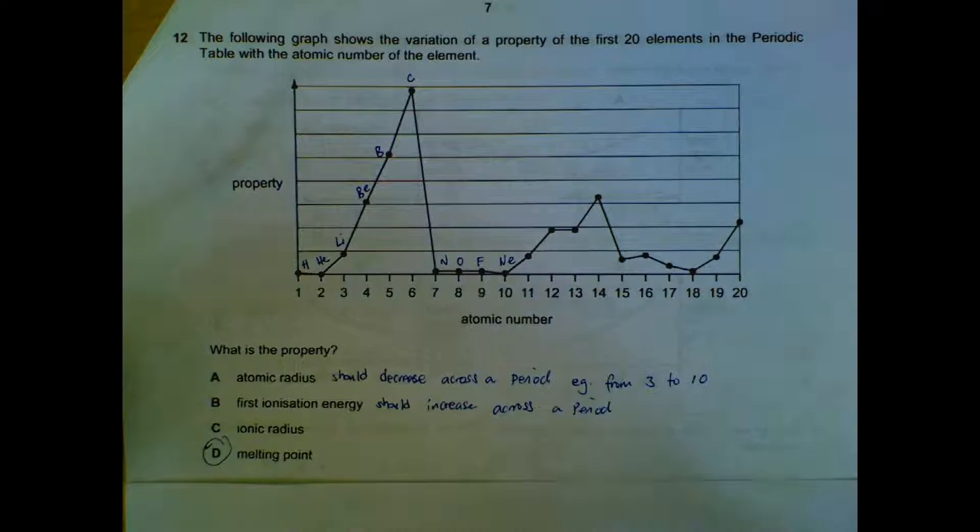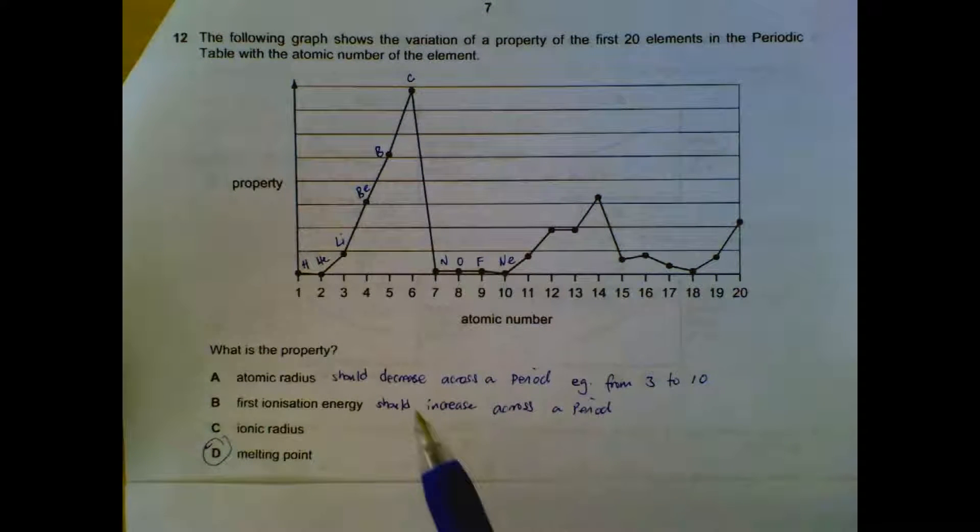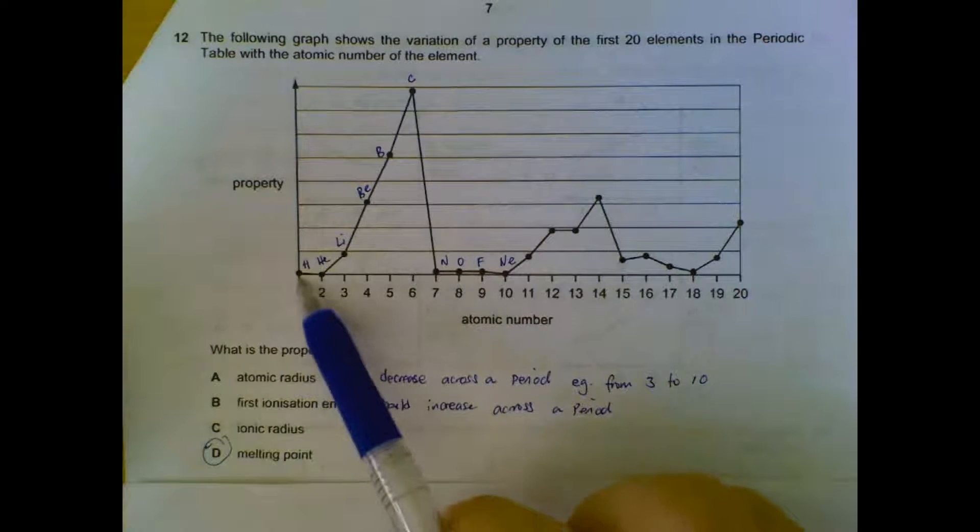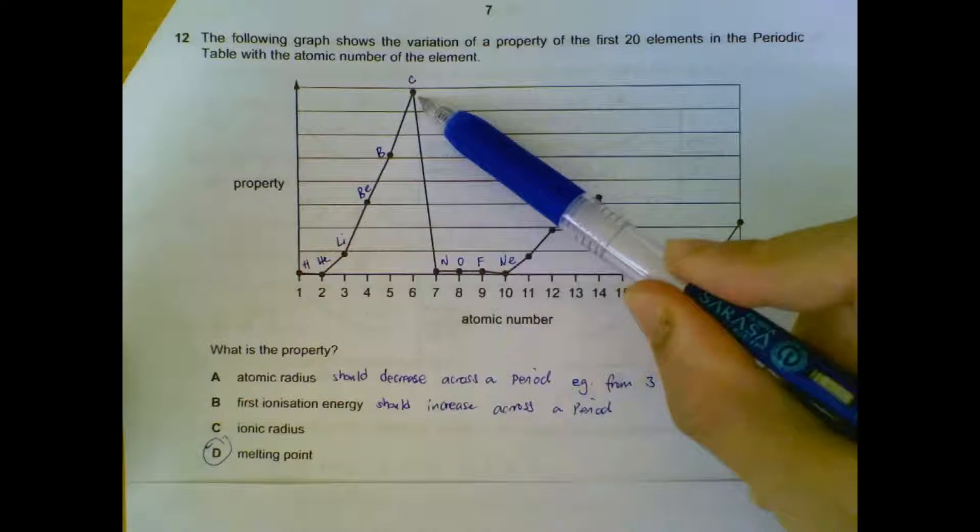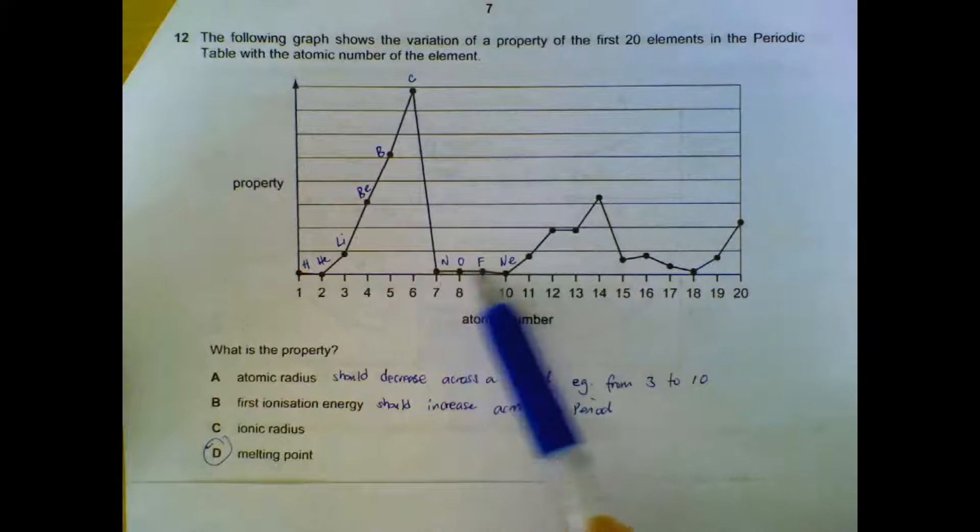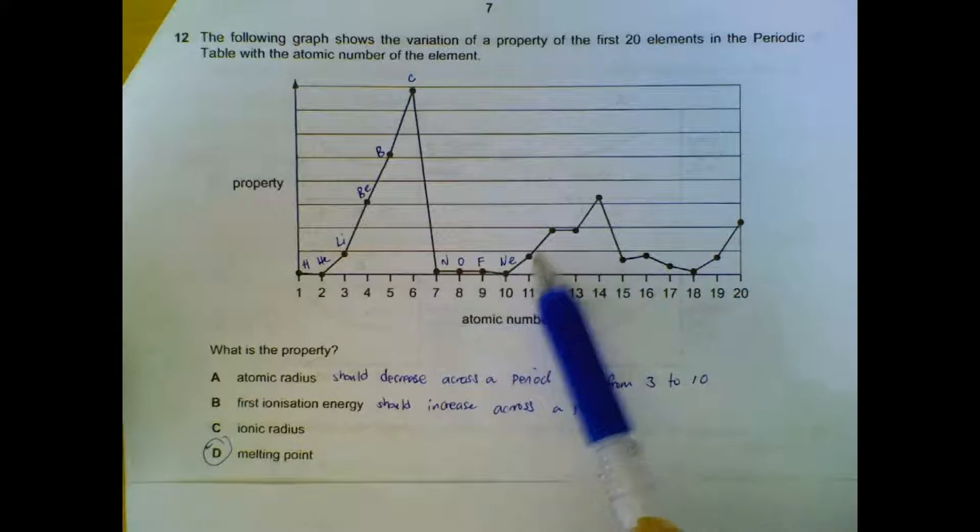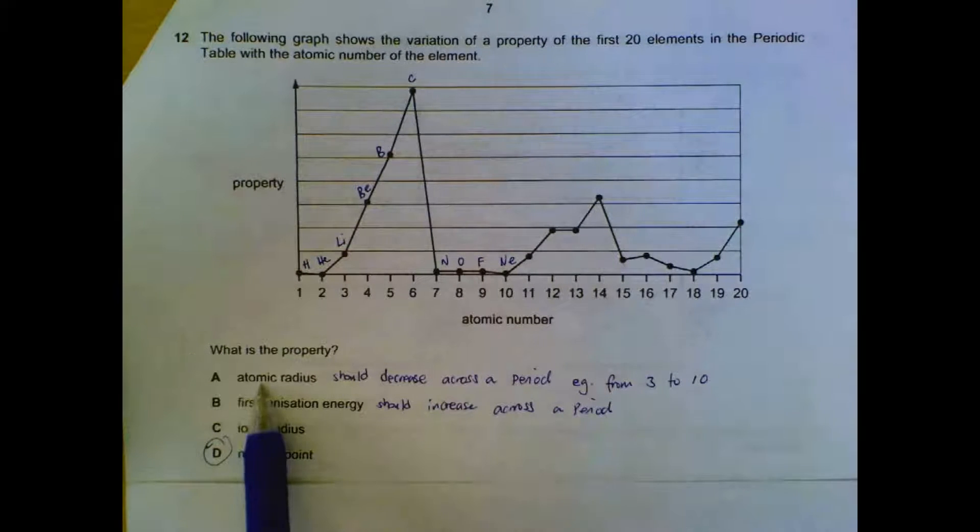Number 12, properties of the elements. As you go across the 20 elements, what is the property shown? Answer is D, melting point. You must know that as you go across the period, we will hit a maximum when we reach carbon, graphite, or diamond, which has very high melting point. As you go down to the non-metals it drops drastically, then to neon, and as you go to the metals again it starts to climb up. So melting point is the pattern shown here.